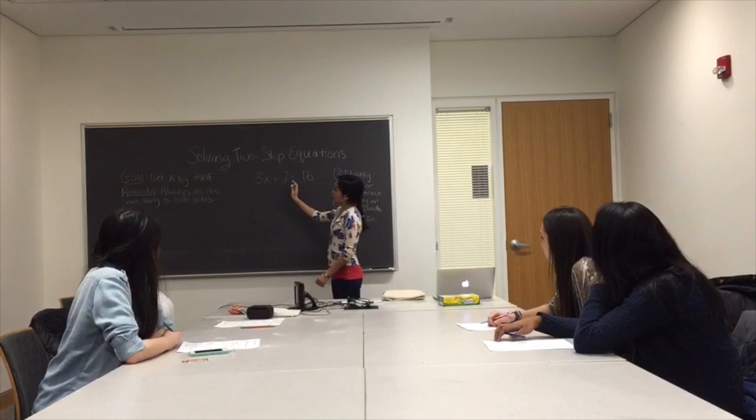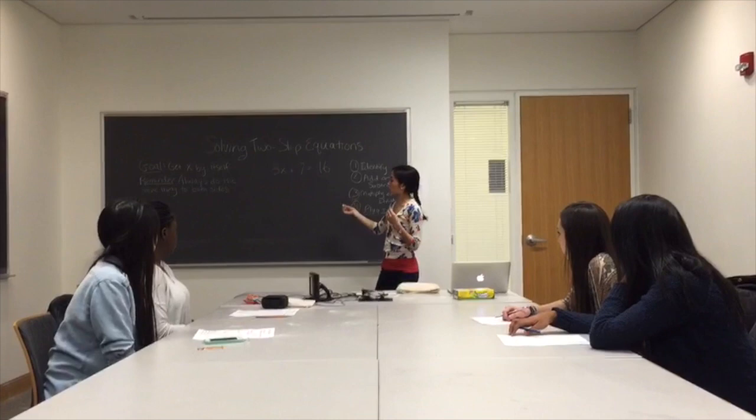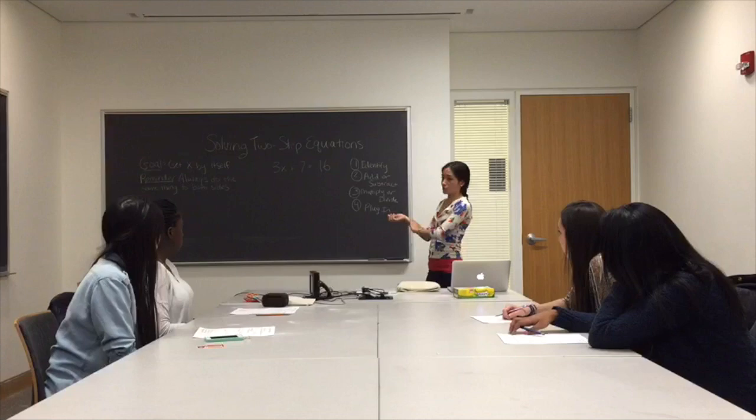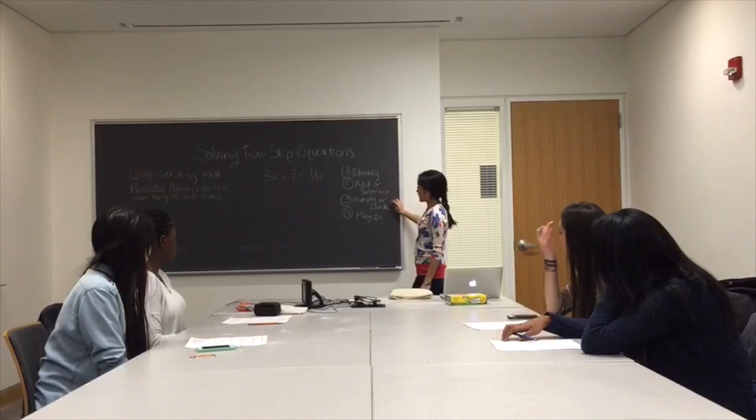When you look at an equation like this, you'll see that there's an equal side, and there's things on the left side and things on the right side. Whenever we're solving two-step equations, we want to make sure we do the same thing to both sides. There are going to be four steps: identify the variable, add or subtract, multiply or divide, and plug in.